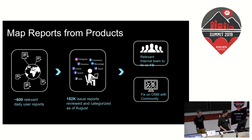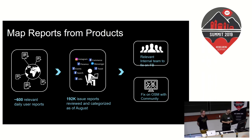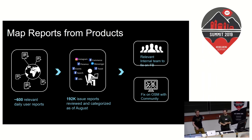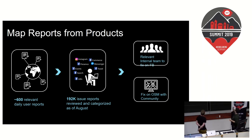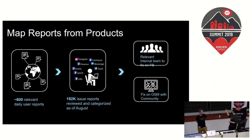As a product, we get a lot of reports in from users about things they find in the product, including the map surface. Currently we're getting about 600 reports daily that are relevant from our users, and as of August we've had over the past year and a half or two years, about 190,000 full reports that we've gone through, reviewed, and categorized. If it's a Facebook data issue, we contact the relevant product team and fix it there. If it's in OSM, we get it back into the community or fix it ourselves.